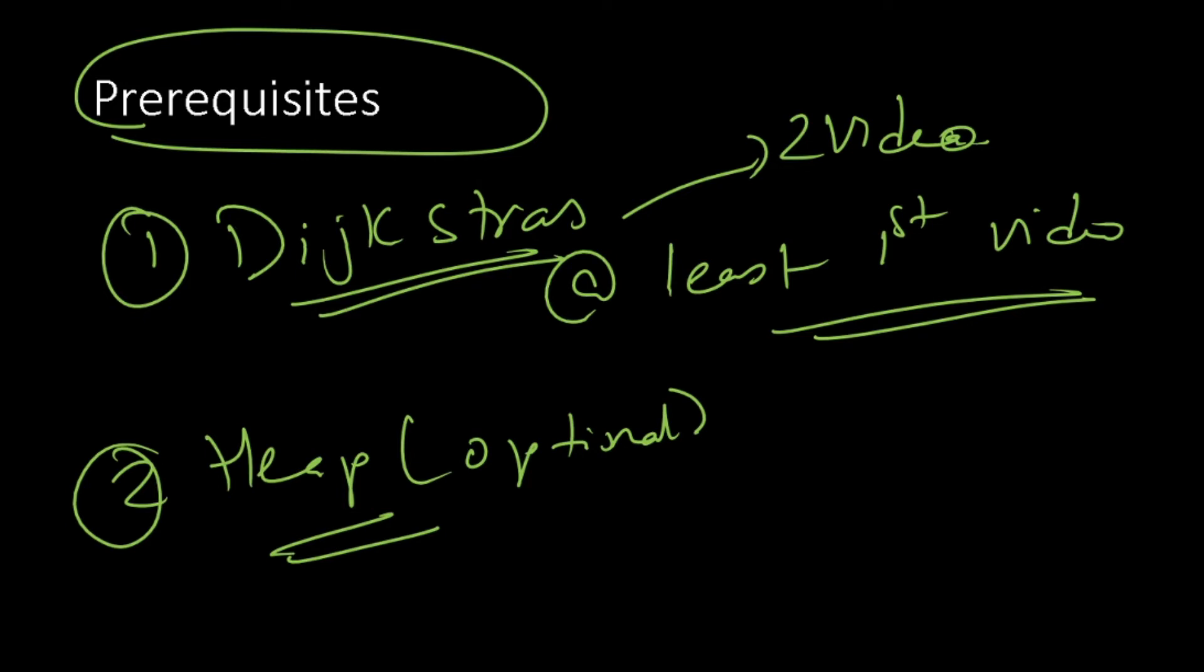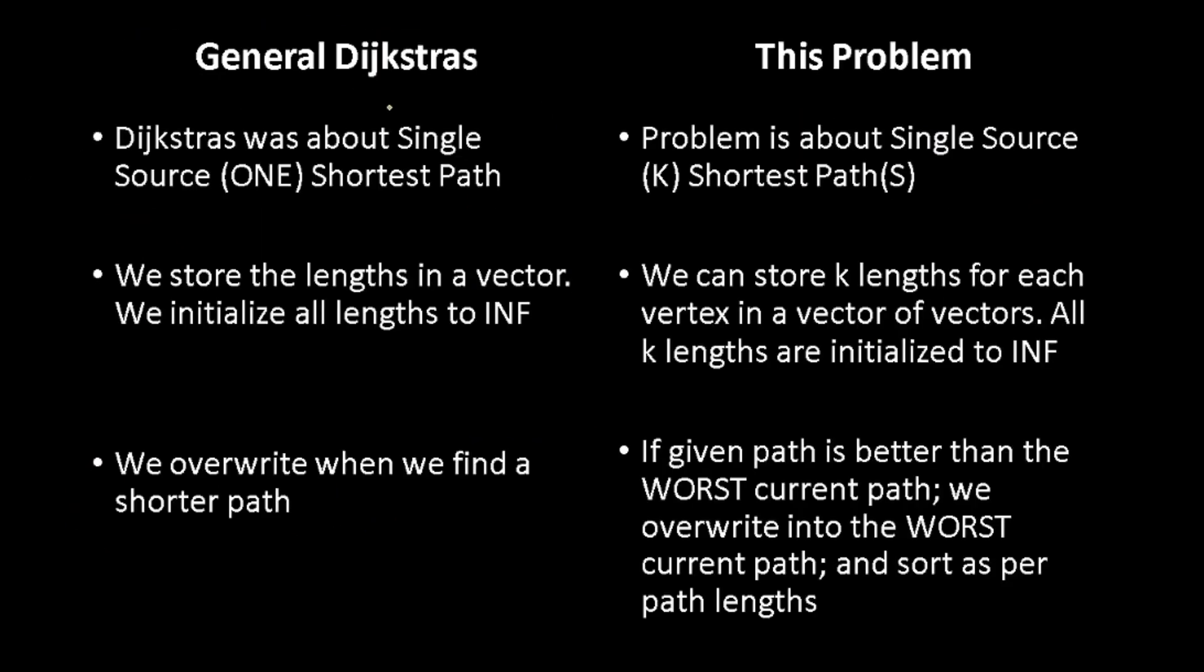So now let us compare this problem with Dijkstra's. This problem is about single source, k shortest path, whereas Dijkstra's was about single source, single shortest path. So, in other words, this is a more general case.